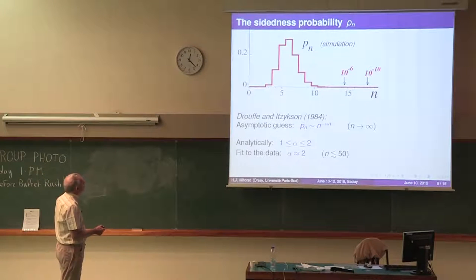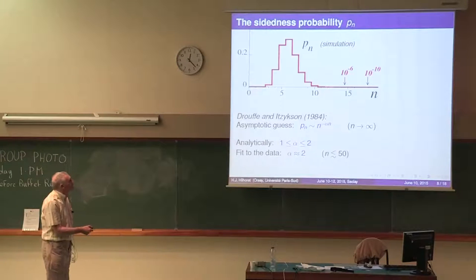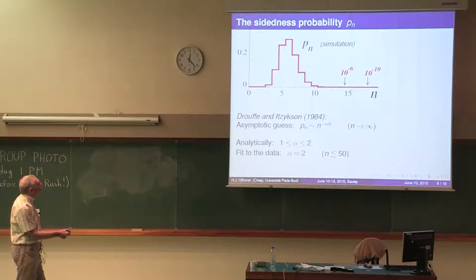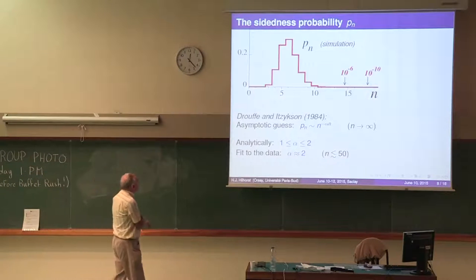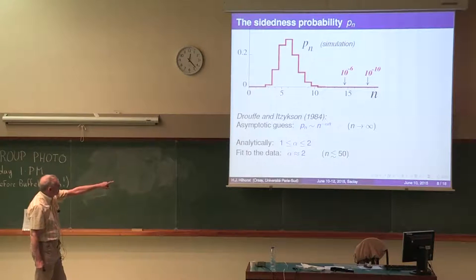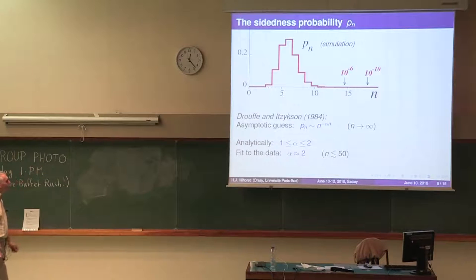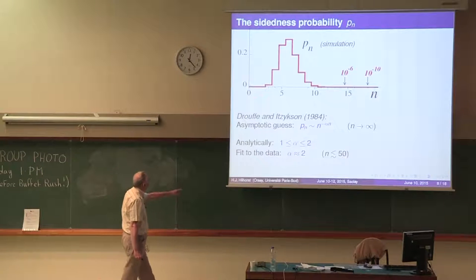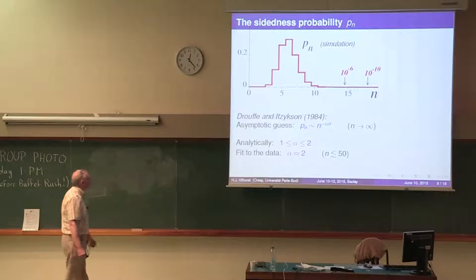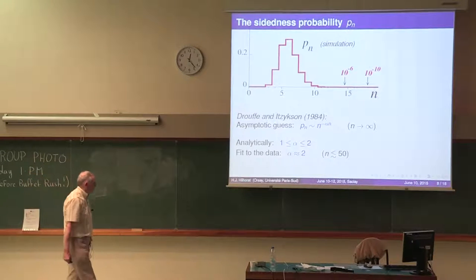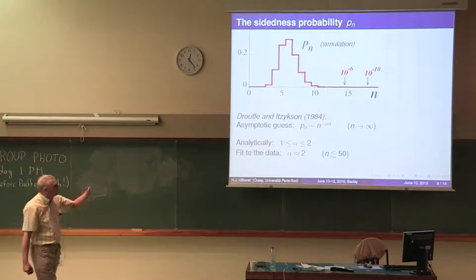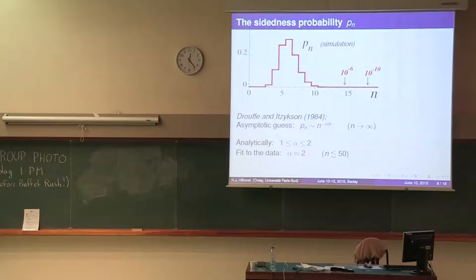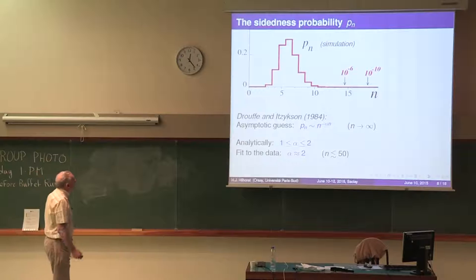Now if you do a naive simulation, the probability to have a 15-sided cell is less than 1 in a million, and the probability to have a 19-sided cell is of the order of 1 over 10 million. Drouffe and Itzykson, in 1984, guessed that asymptotically P(n) would go like n to the minus α^n, with α necessarily between 1 and 2. They devised an improved simulation method and by fitting to the data, concluded that α would be rather close to the upper limit of α equal to 2. They simulated sizes of n up to about 50, but their error bars were considerable above n of about 30. So their simulations were essentially limited to n of the order of 25-30.